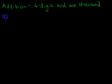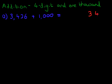What is three thousand four hundred and twenty-six plus one thousand? Now this is relatively easy, but we are going to work this out using the vertical format. So the first stage is to write this question again in columns. Let's do that over here: three thousand four hundred and twenty-six plus one thousand.